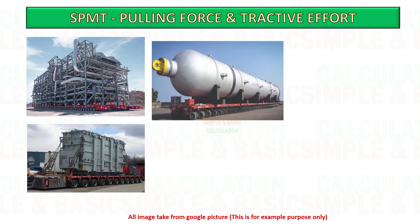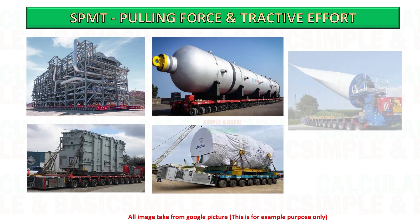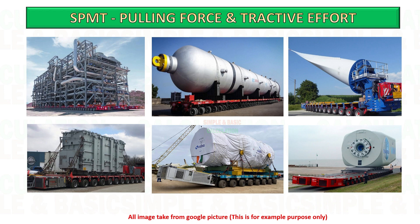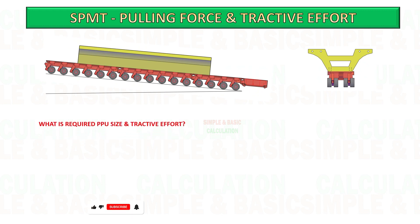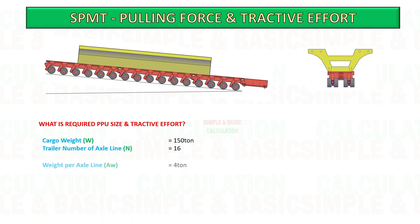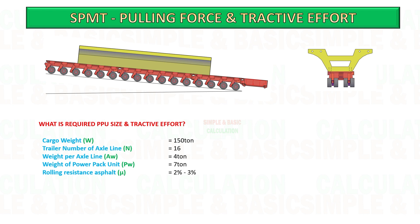Here are some sample pictures of transportation of heavy cargo using a self-propelled modular transporter. Example: you have a task to transport one 50-ton concrete cargo using a 16-axle-line trailer with one unit of PPU. Weight per axle line is 4 tons and weight of power pack unit is 7 tons. Rolling resistance depends on the type of surface; rolling resistance for asphalt is 2–3%. Calculate the required size of power pack and tractive effort for SPMT.